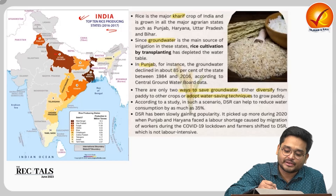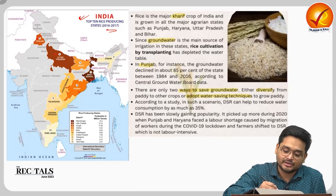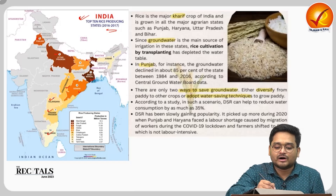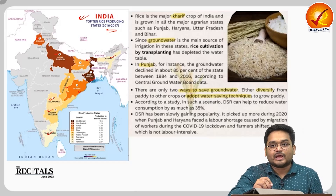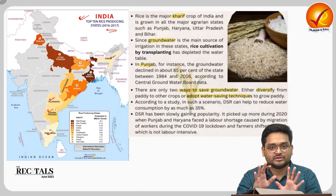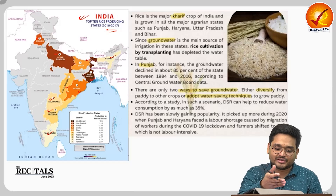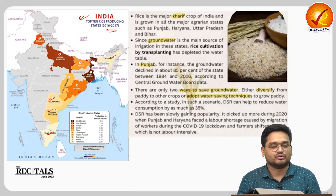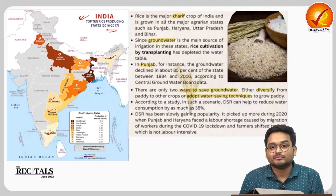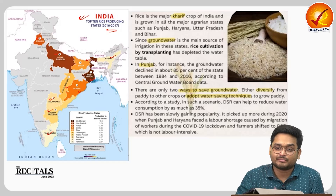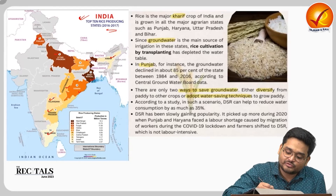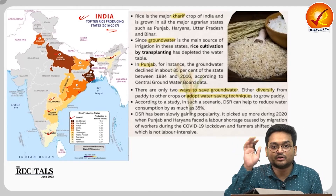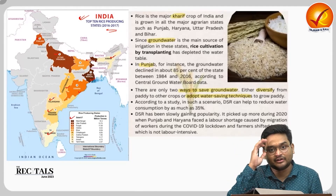The major rice-producing states include Punjab, Uttar Pradesh, Bihar, West Bengal, Odisha, Chhattisgarh, Telangana, Andhra Pradesh, Tamil Nadu, and Assam. This is not an exhaustive list as some states also produce minor amounts of rice. Among the largest producers, West Bengal is the largest rice-producing state in India.